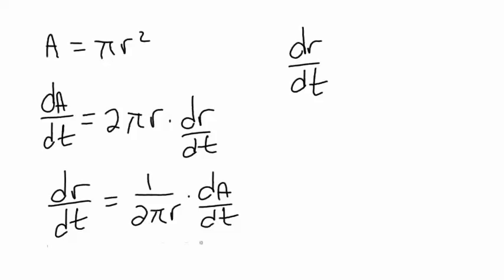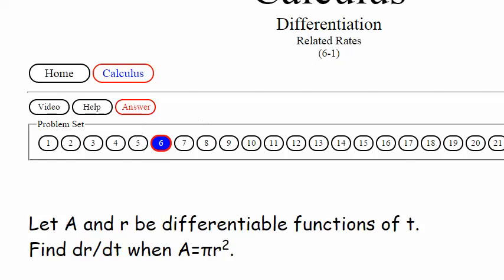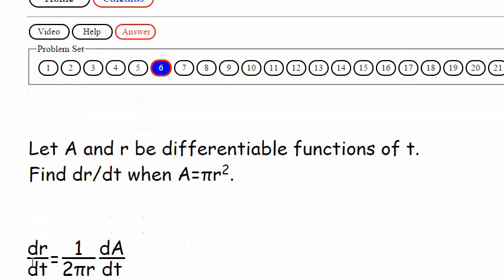But we just kind of wrote it in a more standard form here. It's just the more standard way of writing it. Let's hit the answer. dr/dt is 1 over 2 pi r times dA/dt. Okay.